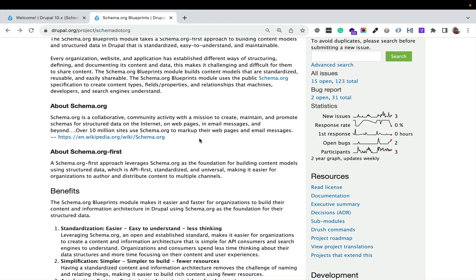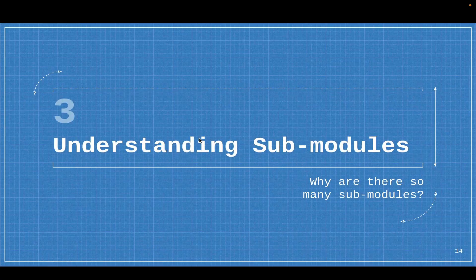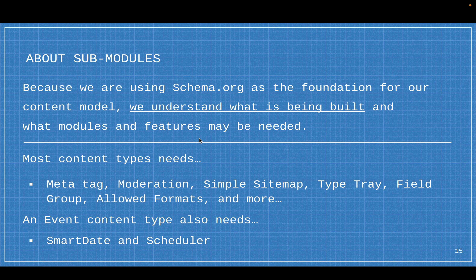I'm going to keep going and talk about sub-modules, because you're going to get overwhelmed and I want to prepare you for it. Because we're using Schema.org as the foundation for a content model, we understand what's being built and what modules and features may be needed. Each feature tends to be a module in Drupal. Most content types need meta tags, moderation, sitemap, type tray, field group, allowed formats, and more. We can automate that because we know we're creating content types.